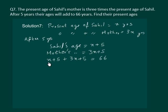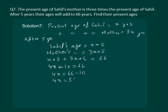Let us start solving. We add the like terms: x plus 3x gives us 4x, and 5 plus 5 gives us 10, so 4x plus 10 is equal to 66. Now let us transpose 10 to the other side of the equality.